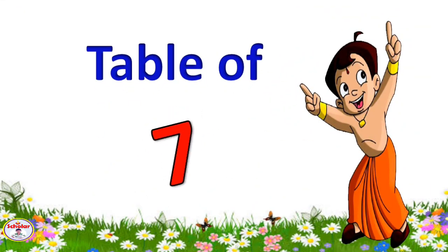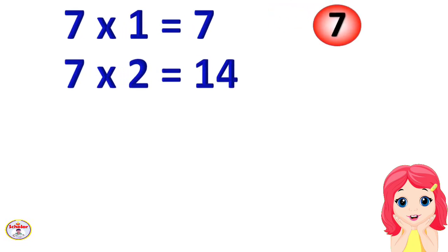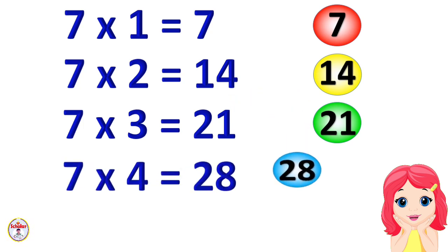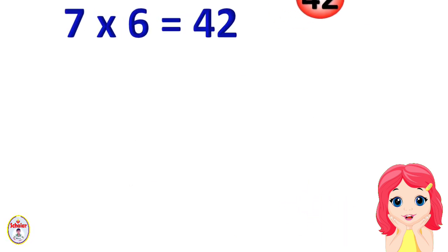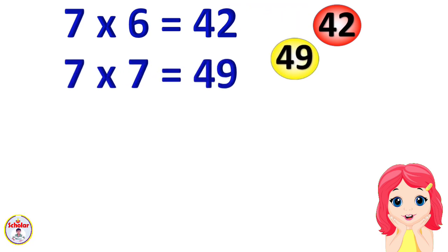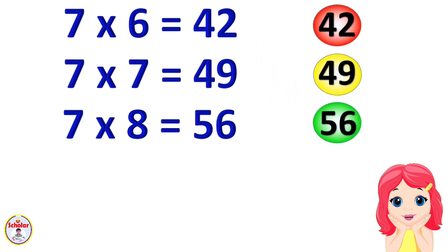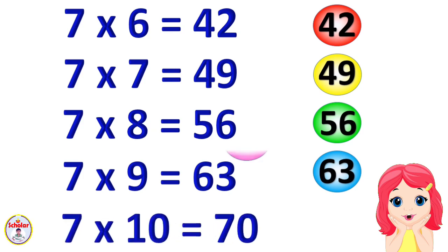Table of 7. 7×1=7, 7×2=14, 7×3=21, 7×4=28, 7×5=35, 7×6=42, 7×7=49, 7×8=56, 7×9=63, 7×10=70.